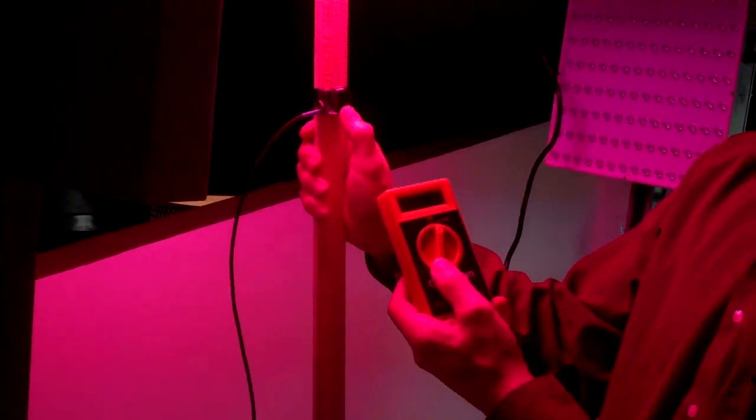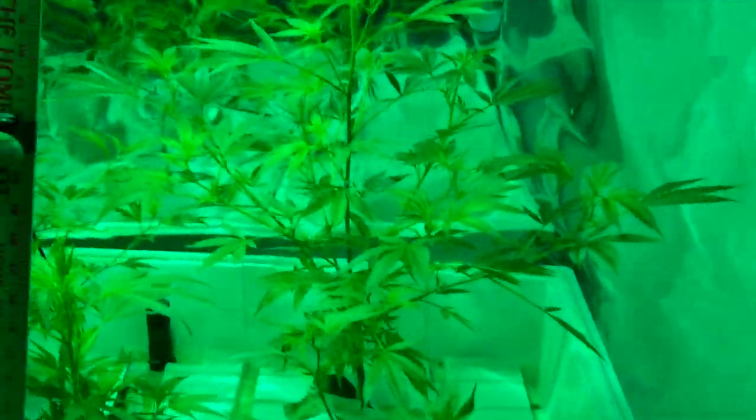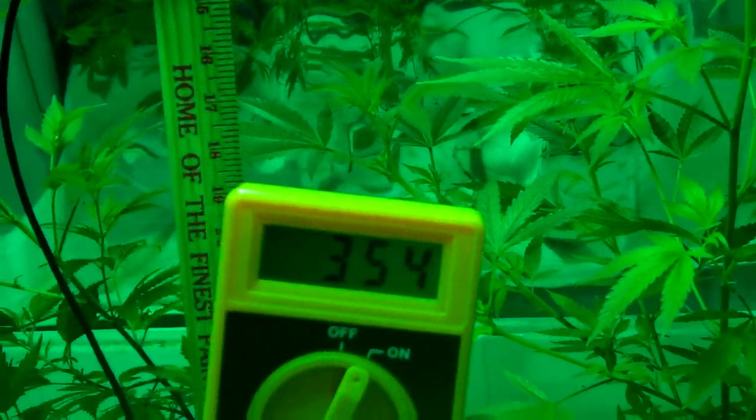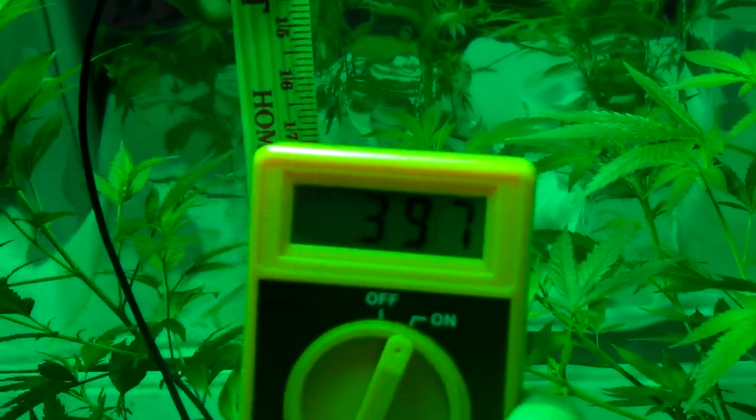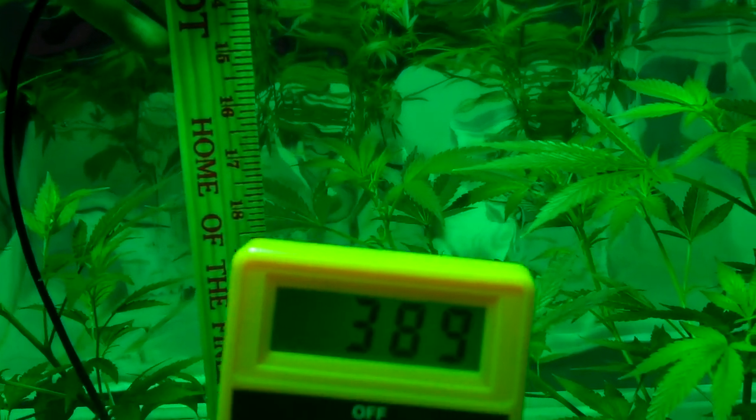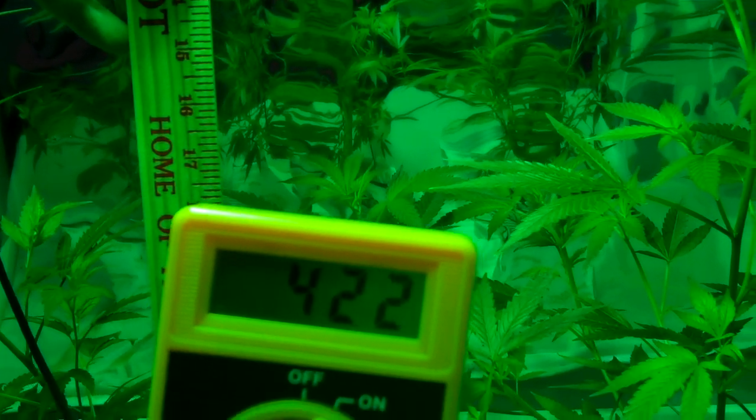So now what we're going to do is we're going to go over to a 600 watt metal halide. And the meter reading is 389, 390, 400, 411, 416. So the brightest that we got on that was 416 on a 600 watt metal halide.